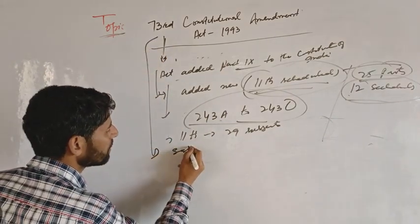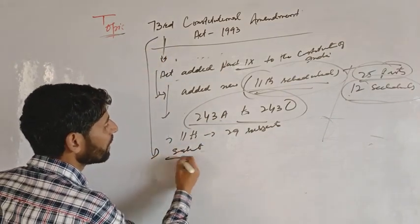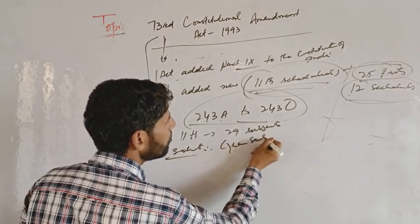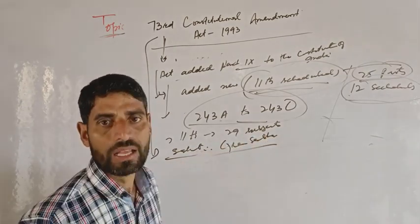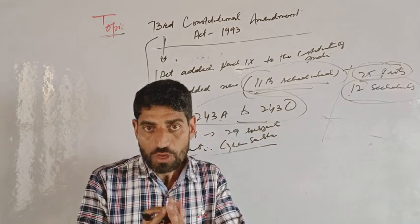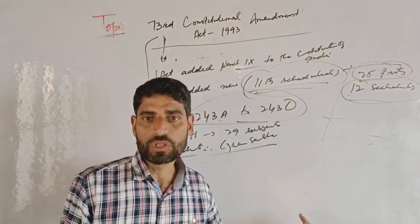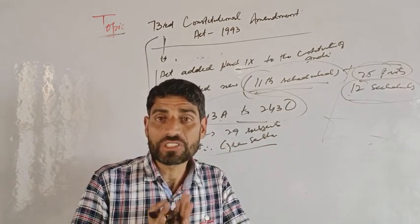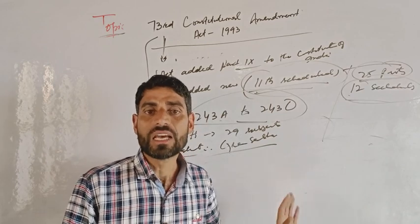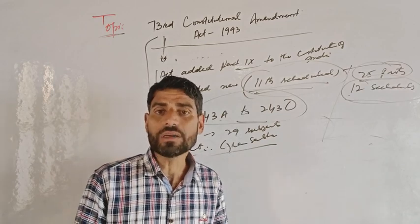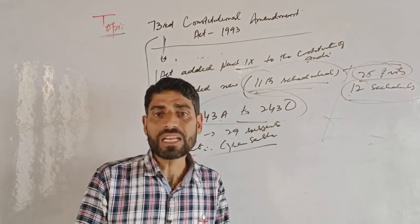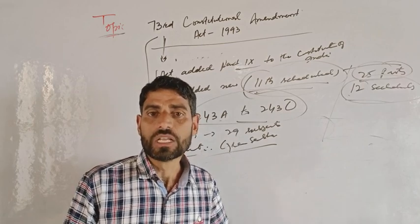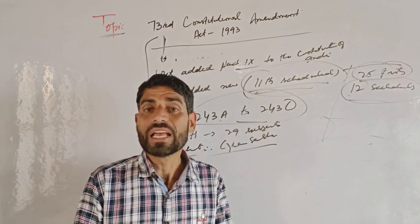As for the salient features of the 73rd Constitutional Amendment Act, this act provided for a Gram Sabha as the foundation of Panchayati Raj. This means that all persons registered in the electoral rolls of a village constitute the Gram Sabha.